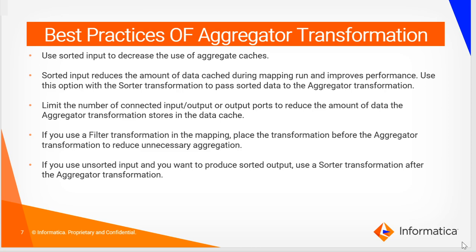Best practices of aggregator transformation. Use sorted input to decrease the use of aggregate cache — sorted input will reduce the amount of data during mapping run and improve performance. Use this option with a sorter transformation to pass sorted data to the aggregator transformation. Limit the number of connected input or output ports to reduce the amount of data the aggregator transformation stores in the data cache. If you use a filter transformation in the mapping, place it before the aggregator transformation to reduce unnecessary aggregation. If you use unsorted input and want to produce sorted output, use a sorter transformation after the aggregator transformation.